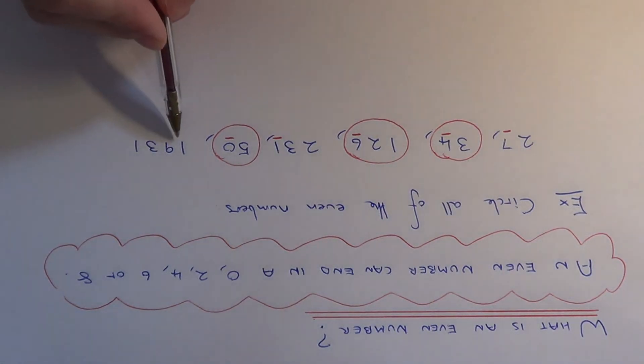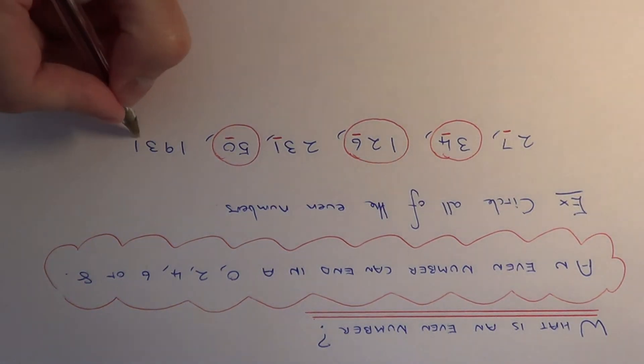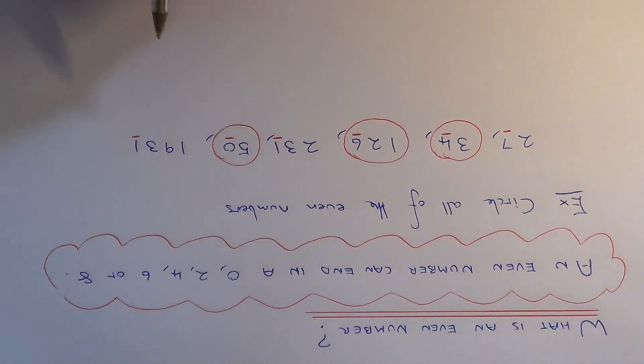And our final number is 1931. So again, we just need to look at the last digit. So again, this one ends in a 1, so this one's not going to be an even number.